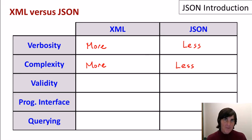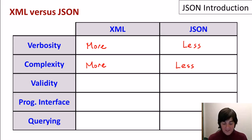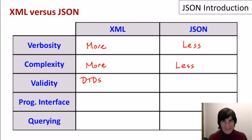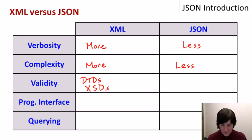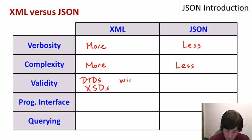Now let's turn to validity. By validity, I mean the ability to specify constraints or restrictions or schema on the structure of data in one of these models and have it enforced by tools or by a system. Specifically, in XML we have the notion of document type descriptors or DTDs. We also have XML schema, which gives us XSDs — XML schema descriptors — and these are schema-like things that we can specify and have our data checked to make sure it conforms to the schema. These are fairly widely used at this point for XML.